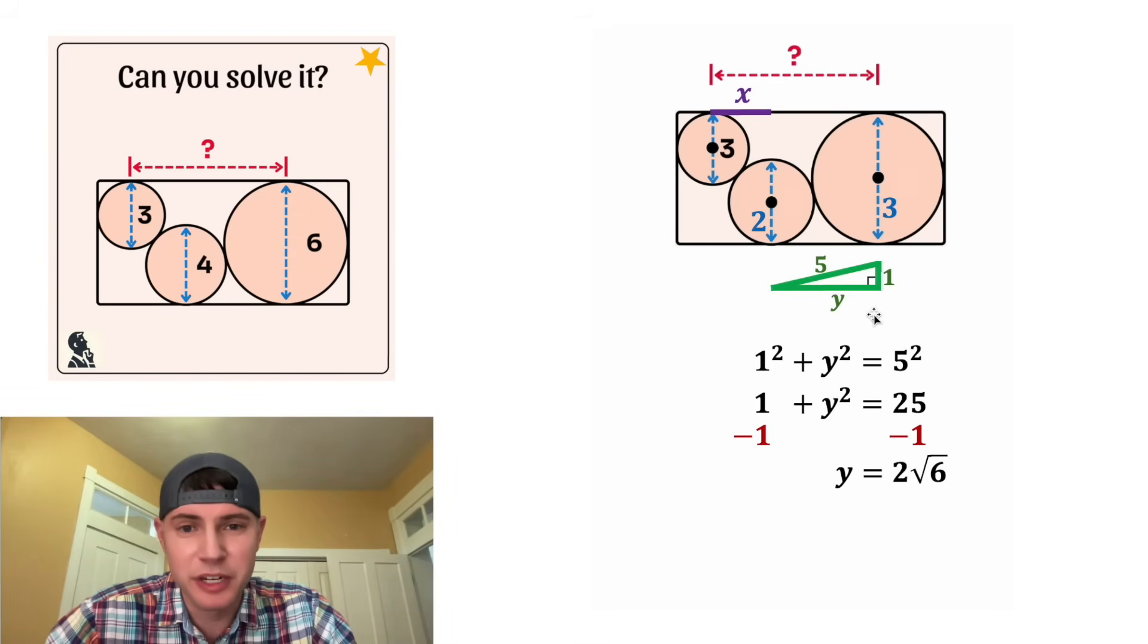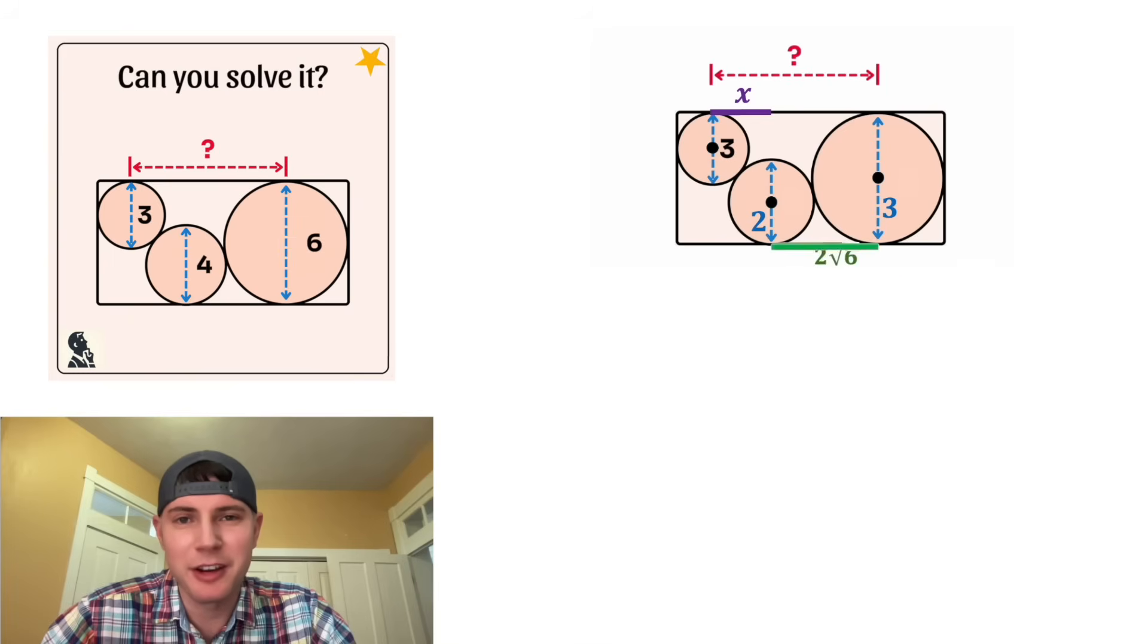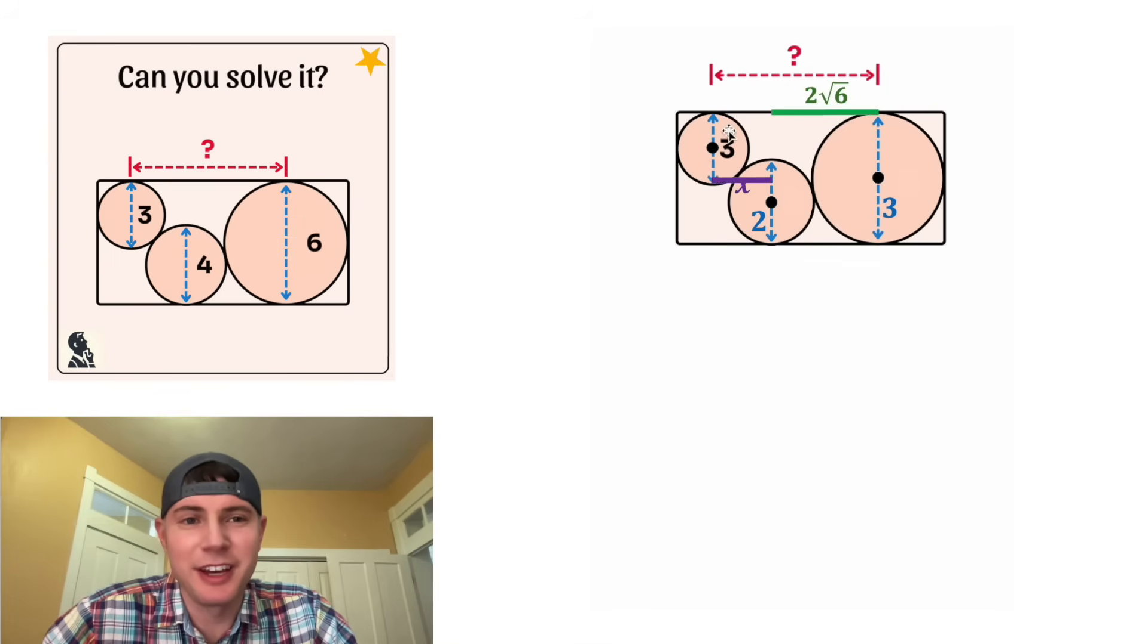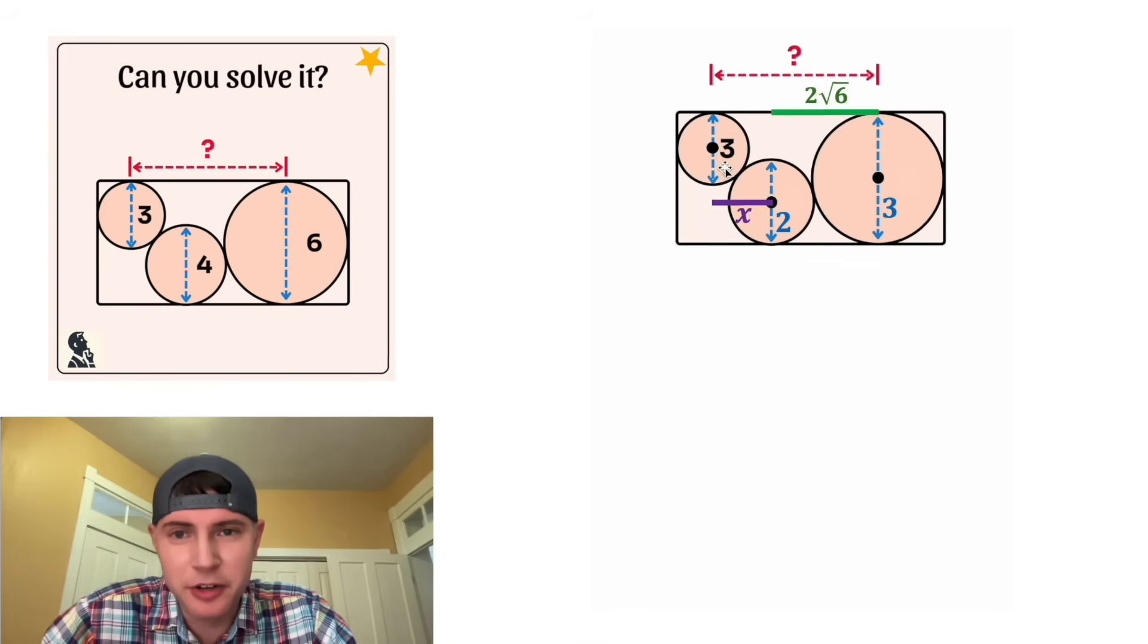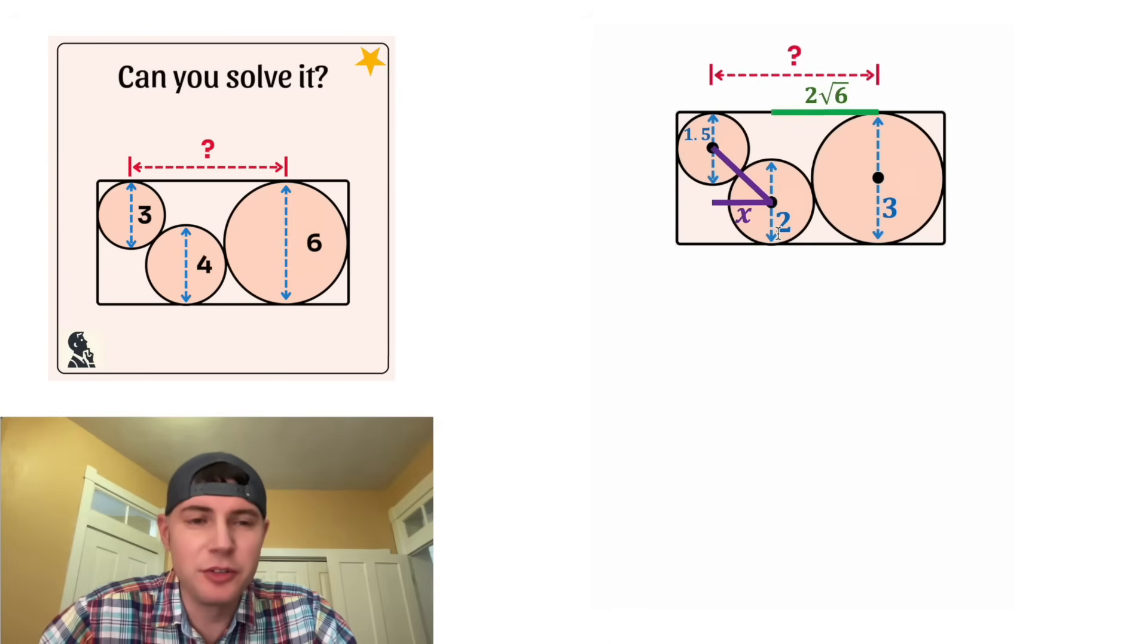So we can update this green distance to be two root six. And we can move it back up here. Now let's work on the X. This circle has a diameter of three, which means the radius is 1.5. Let's connect these two centers, which will be made up of this radius of 1.5 and this radius of two. So the whole thing will have a length of 3.5.